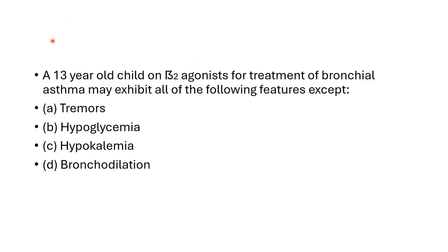Today's case: a 13-year-old child on a beta-2 agonist for treatment of bronchial asthma may exhibit all of the following features except — tremor, hypoglycemia, hypokalemia, and bronchodilation.